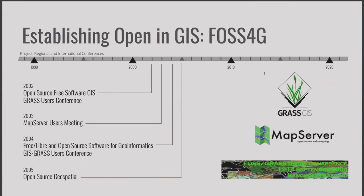Just in terms of establishing FOSS4G — the very first FOSS4G was in 2002 as part of the GRASS users conference. In 2003 there was a MapServer user meeting, and the first conference to actually have the title of FOSS4G was in 2004 in Bangkok. These events predate the OSGeo Foundation, so this conference is actually bigger than just OSGeo. You can find many groups holding FOSS4G conferences around the world.